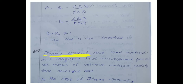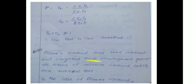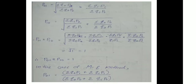Fisher's method, Marshall-Edgeworth method, and the weighted and unweighted geometric mean of relative method satisfy the time reversal test. In the case of Fisher's method, Fisher's index number P01 equals the square root of (summation Q0·P1 / summation Q0·P0) into (summation Q1·P1 / summation Q1·P0).